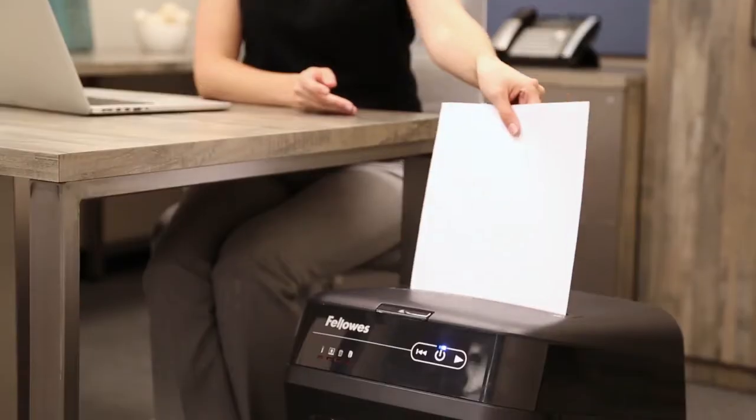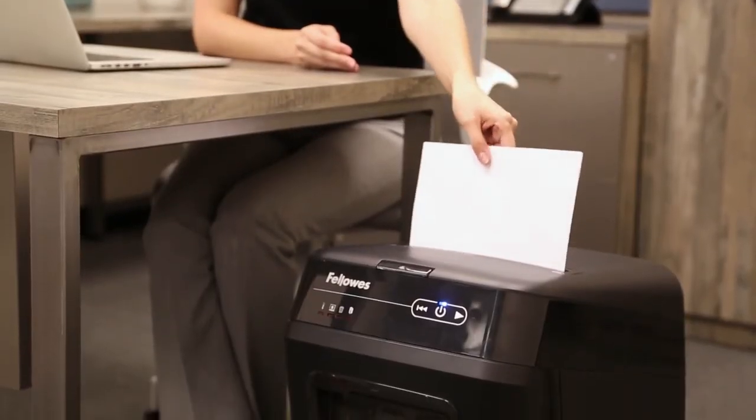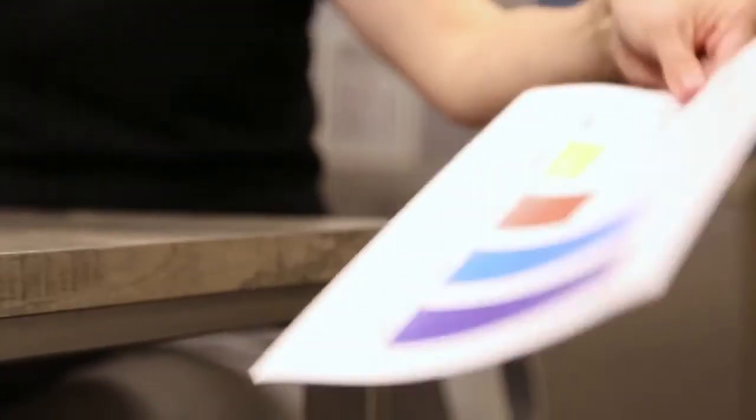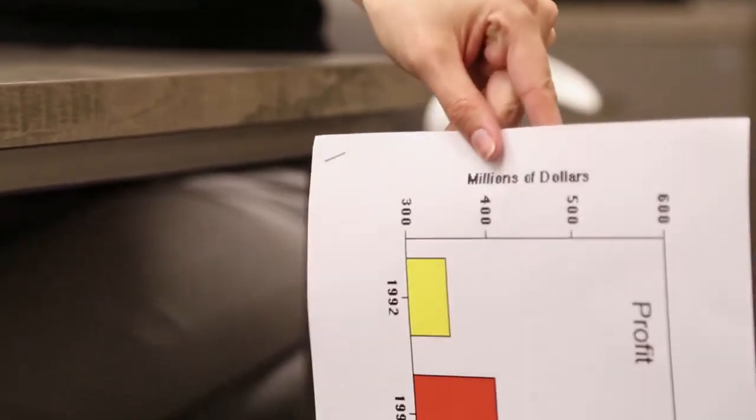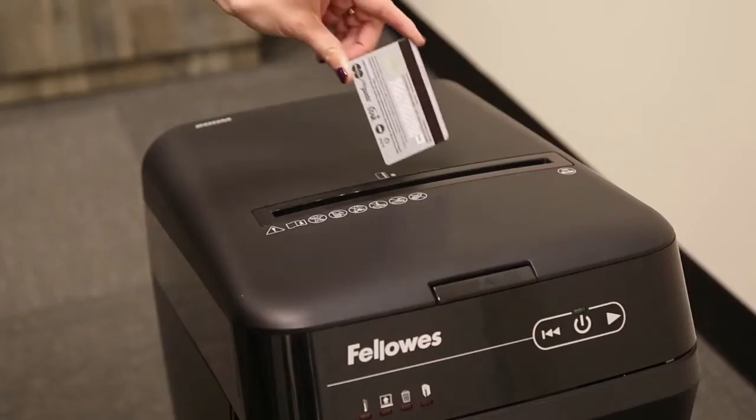For instant shredding, the AutoMax 200M includes a manual feed slot that can shred up to 10 sheets at a time. You don't even need to remove staples before shredding, and the machine is tough enough to handle credit cards too.